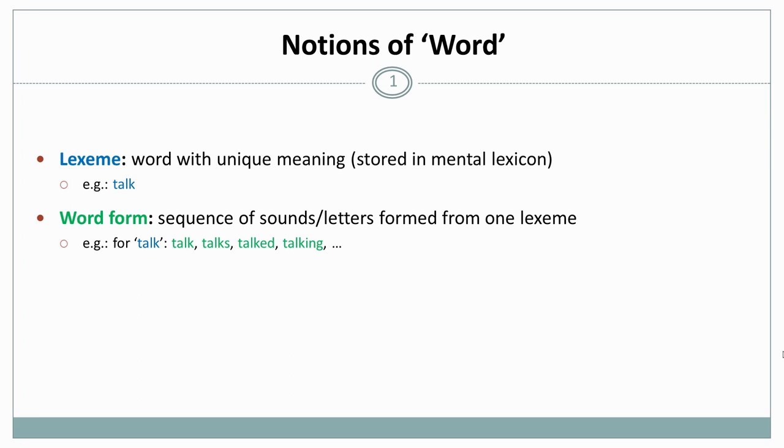A lexeme is a word with a unique meaning that has to be stored in a mental lexicon. The mental lexicon is the storage in our mind that holds all linguistic elements with a unique meaning, so everything that we cannot derive from something else is stored in the mental lexicon. In this sense, talk, talks, talked, and talking are all the same word. They are all part of the same lexeme.